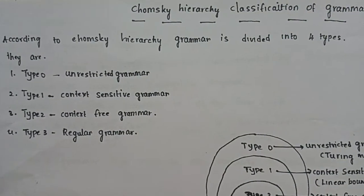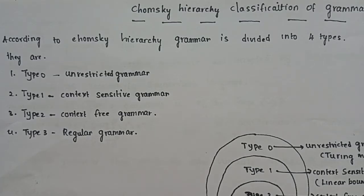According to Chomsky's Hierarchy, grammar is divided into 4 types. Based on Chomsky's Hierarchy, formal grammars are divided into 4 types. Chomsky was a scientist who used automata theory to divide grammar into these 4 types.